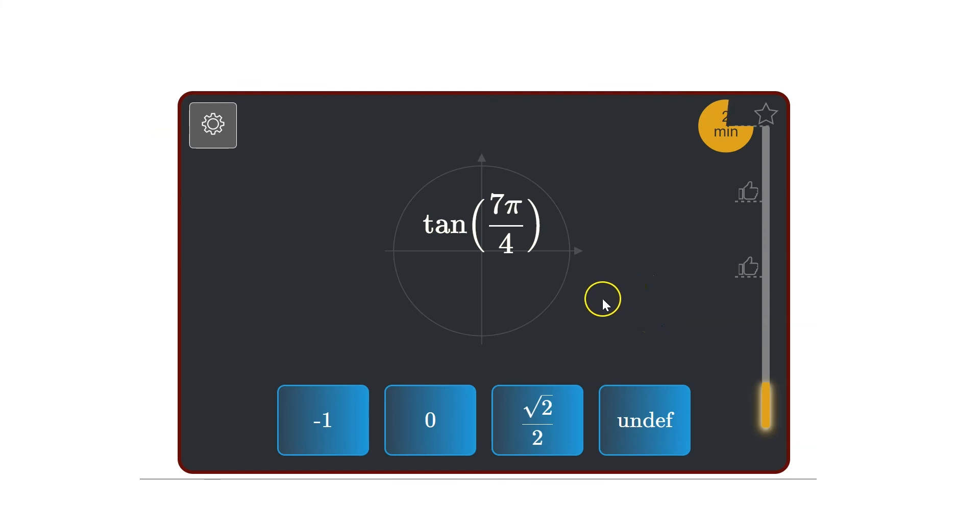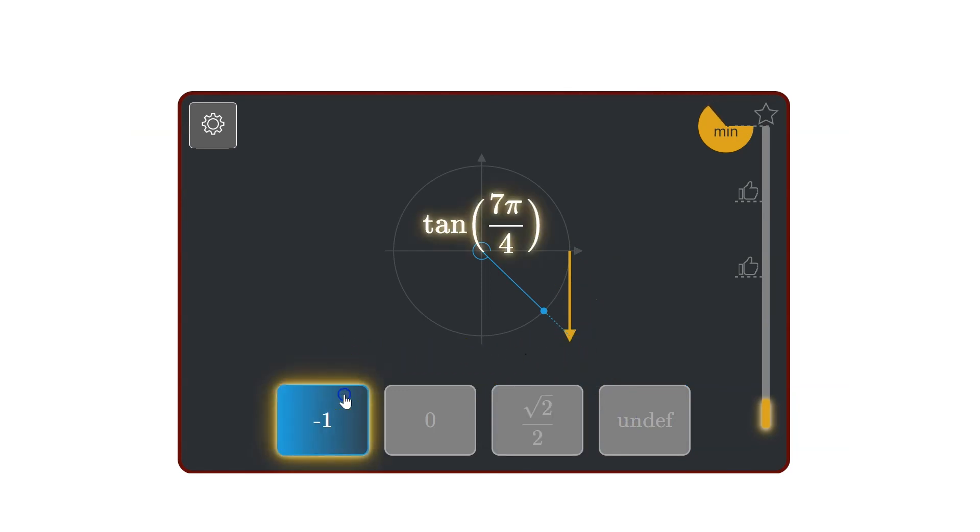And speaking of practice, here's one for you to try. Multi-choice, feel free to pause the video. Otherwise, answers coming in 5. All right, so it's not 0. That would only happen on the x-axis, and it's not undefined. That would be on the y-axis. Where we are in quadrant 4, the tan is actually going to be negative. So once we realize that, there's only one option left. But it's negative 1 because the tan of pi on 4 is 1.